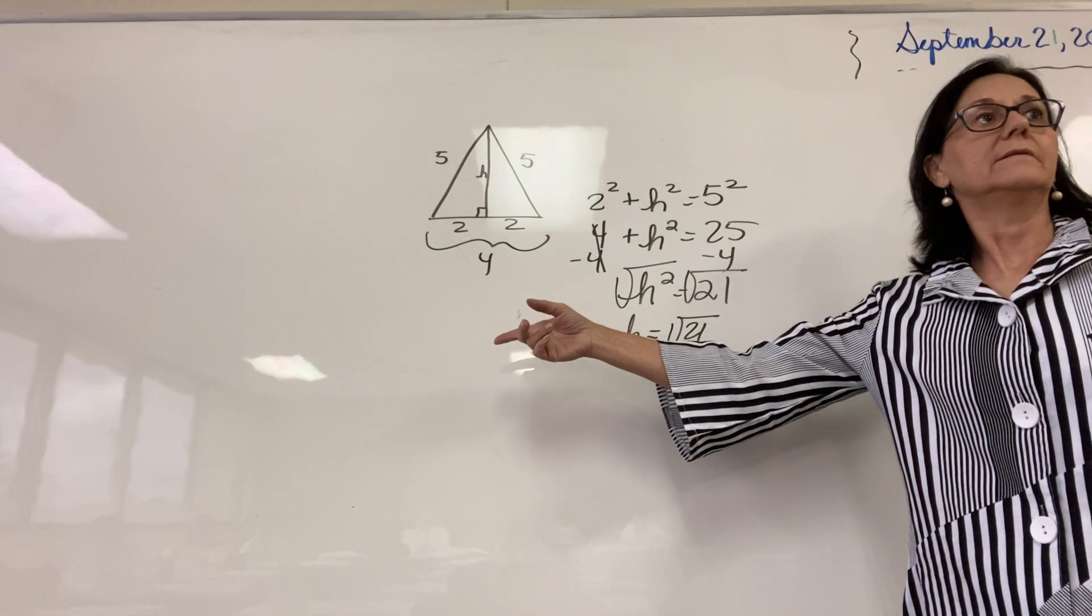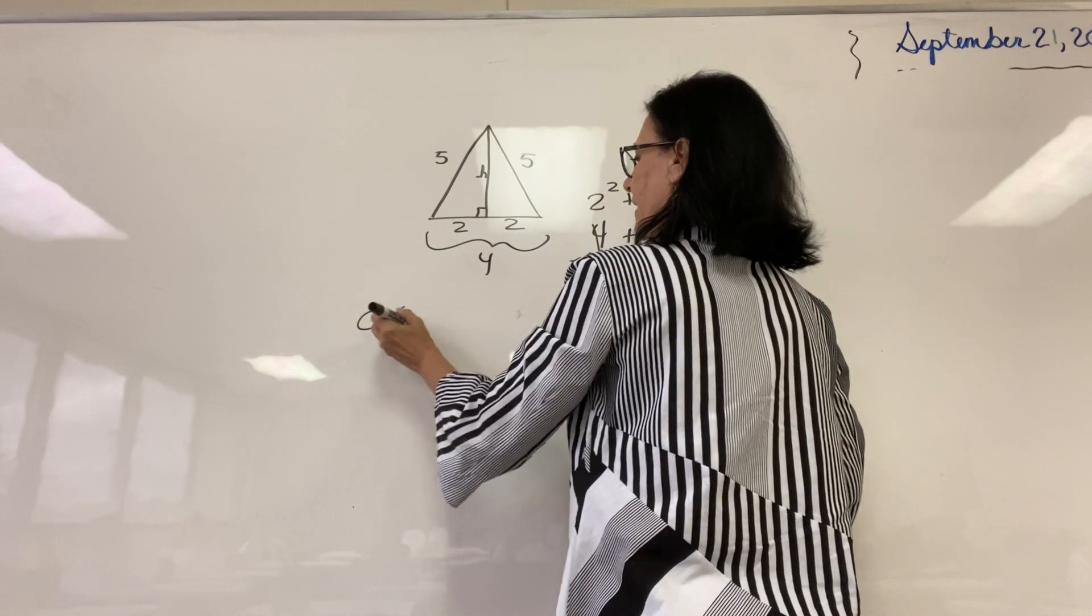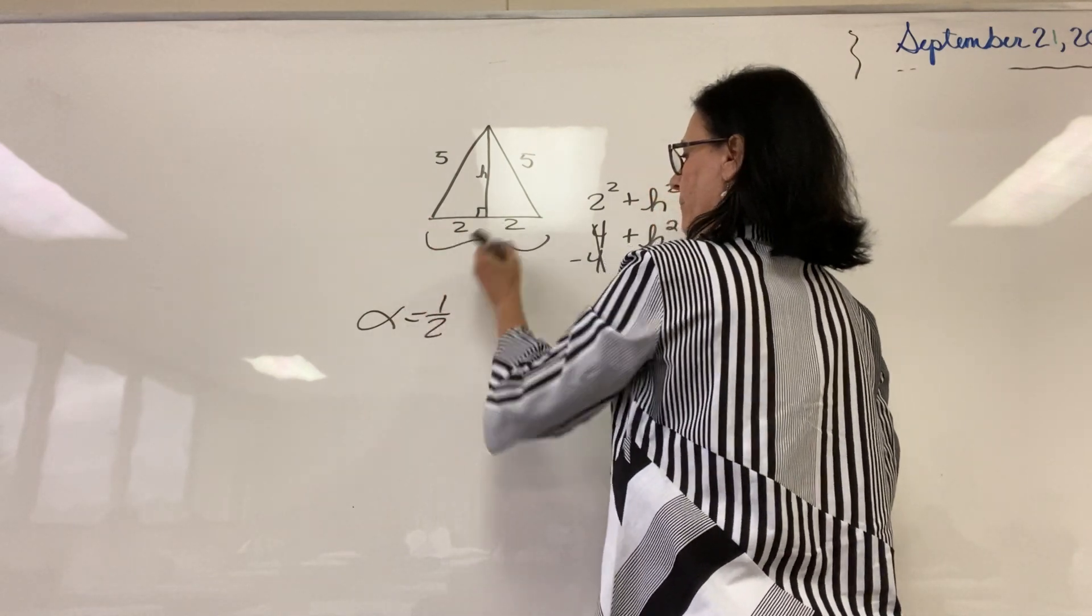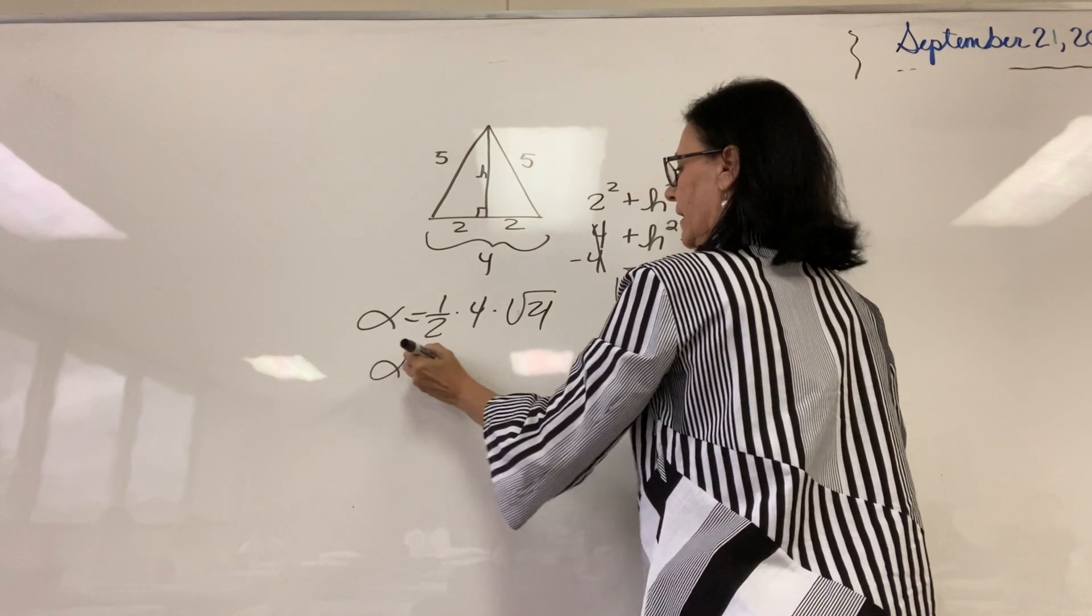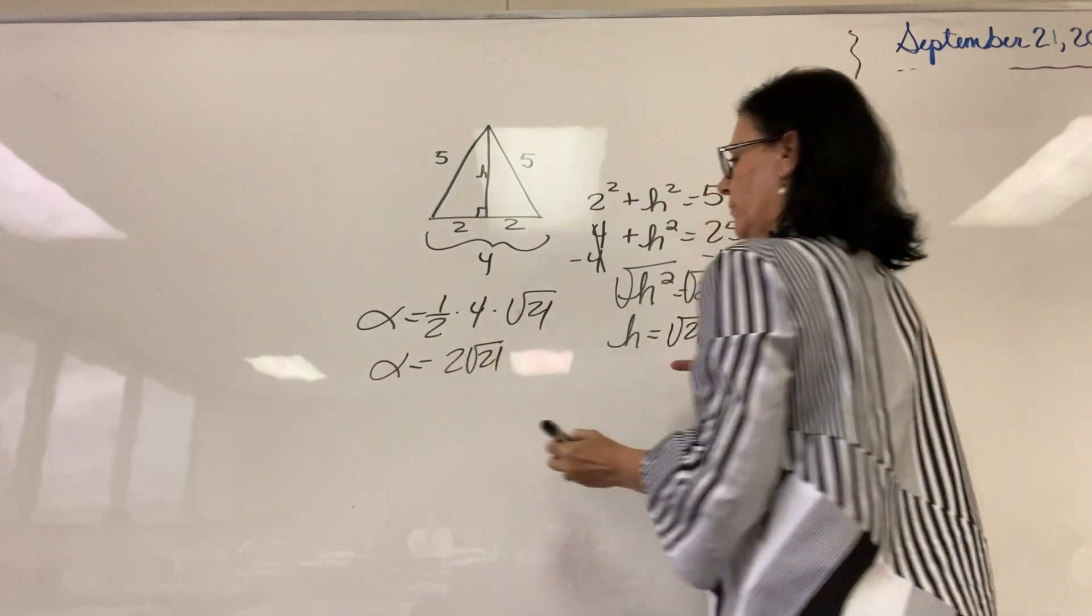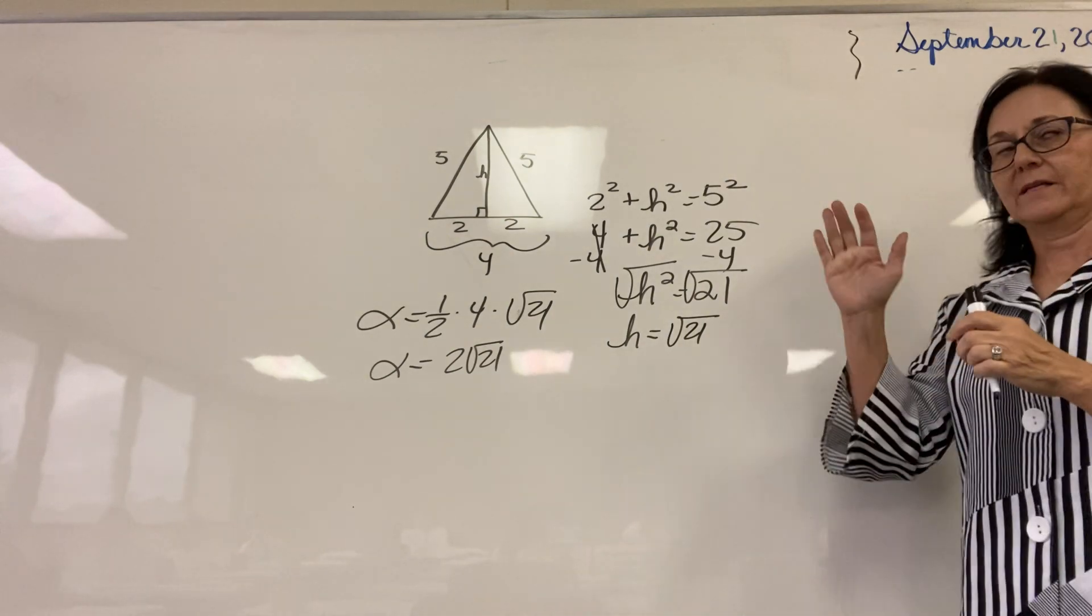So now we can calculate the area. What's the area of a triangle? One half. So the area equals one half base times height. So the area is what? Two square root of 21. And whatever the measurement is.